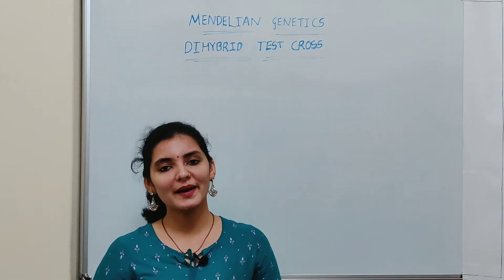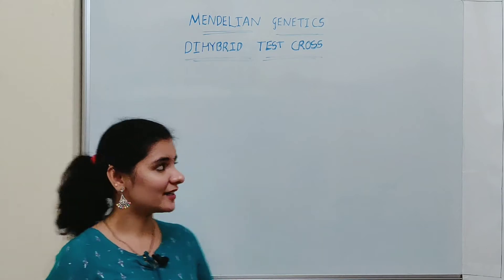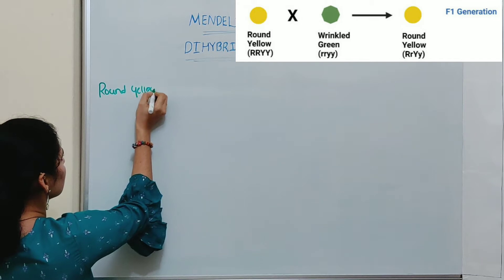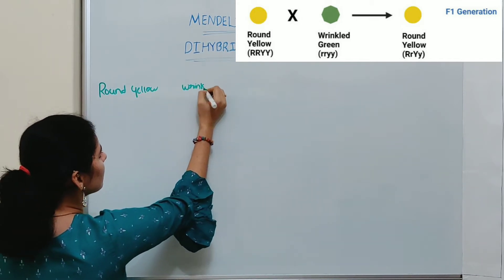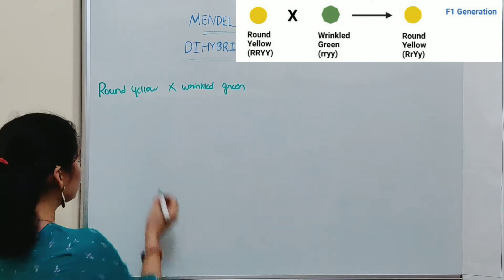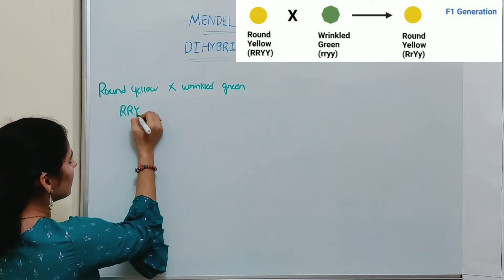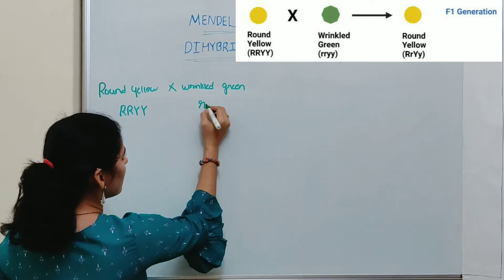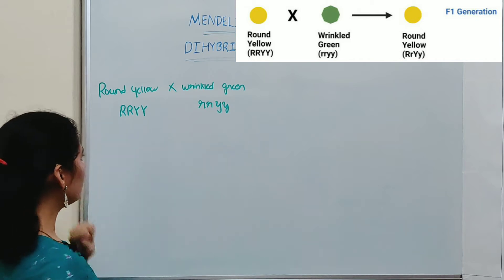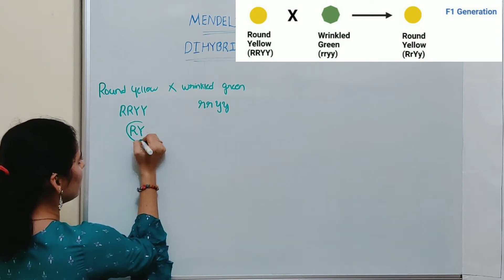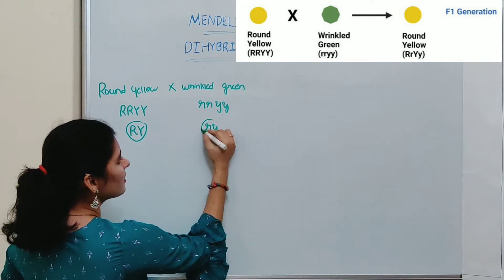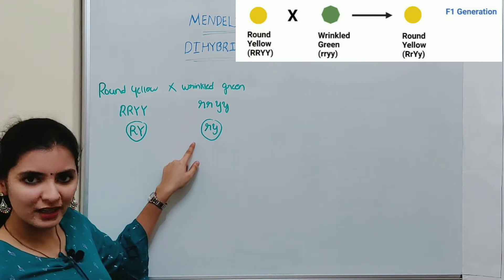We will discuss more about test cross by taking the common example of dihybrid cross — that is crossing between round yellow seeds with wrinkled green seeds. The phenotype of the first plant is round yellow, with genotype RRYY, and the second plant has genotype rryy. The gamete produced by the first plant is RY, and the gamete produced by the second plant is ry.